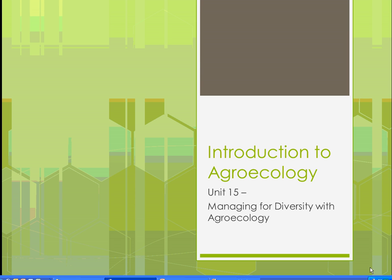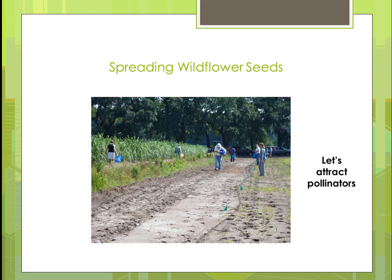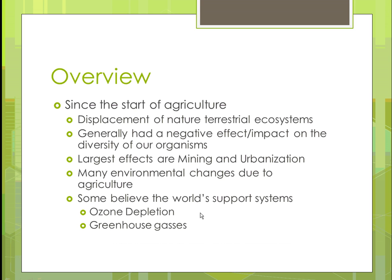Welcome back to Introduction to Agroecology. We're going to cover Unit 15: Managing for Diversity with Agroecology. Here is a picture where they're actually putting wildflowers down in order to promote diversity. There's a crop to the left where two people are walking right along it, but this is an area that's been prepared and they're putting some wildflower seeds down, which is going to attract pollinators to help create some of that diversity.